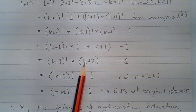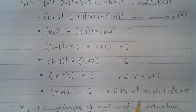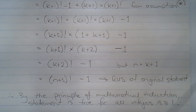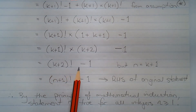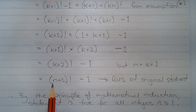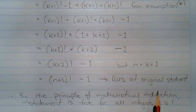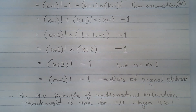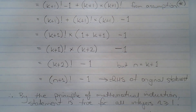Rewriting in terms of n, since n equals k plus 1, k plus 2 factorial minus 1 is equal to n plus 1 factorial minus 1, which equals the right-hand side of the original statement. Therefore, by the principle of mathematical induction, the statement is true for all integers n greater than or equal to 1.